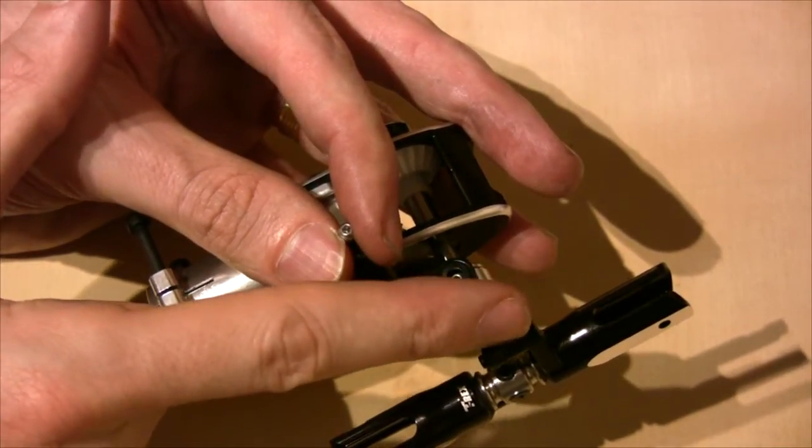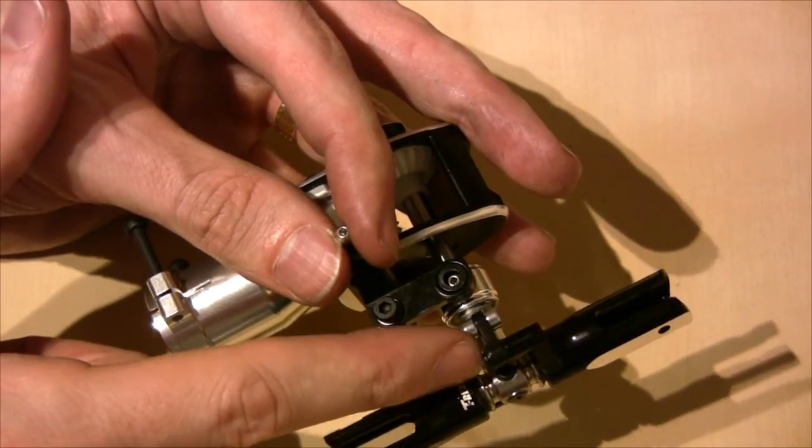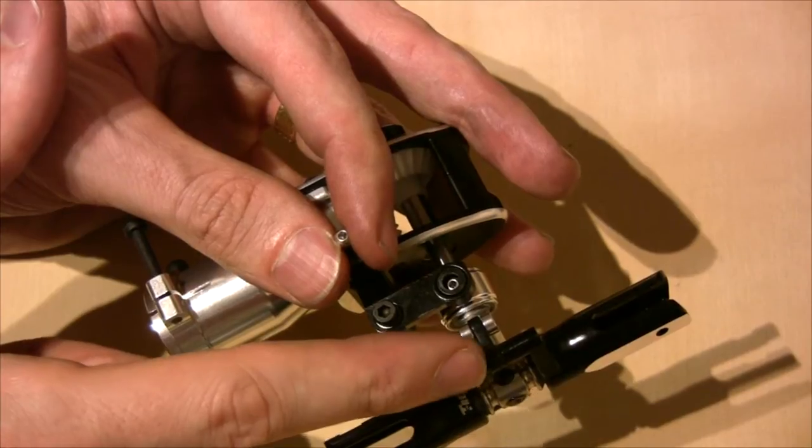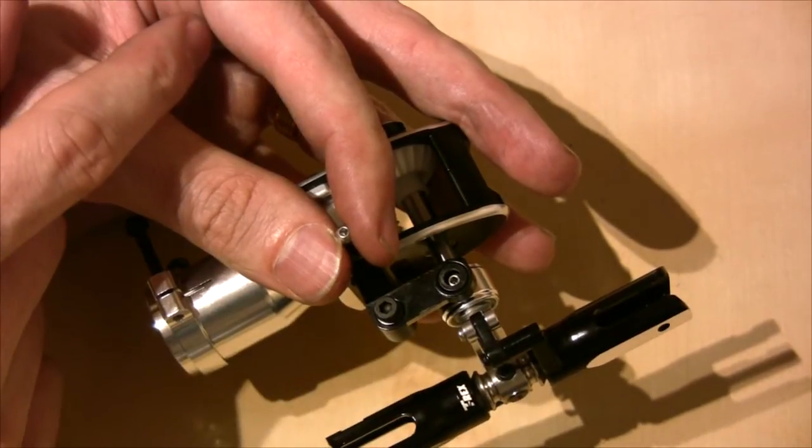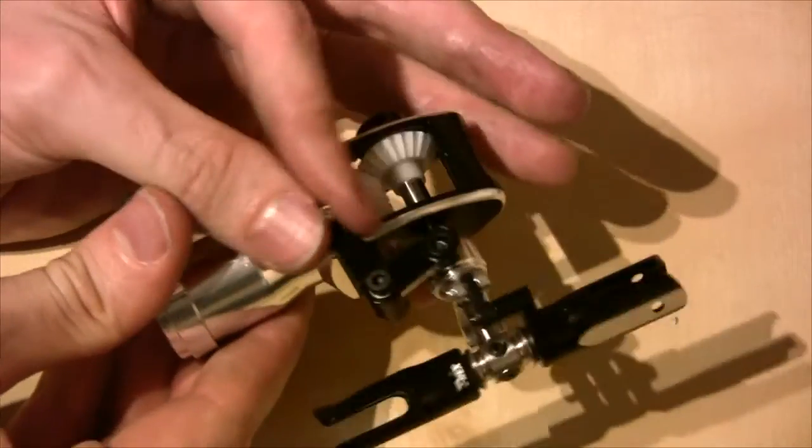I find that sometimes it's easier to actually put the loctite in the hole than it is to put it on the screw in these instances, because you don't want to get any loctite in that little brass bushing. Use tiny amounts of loctite otherwise this will get gummed up and the movement becomes really horrible.